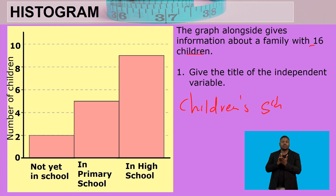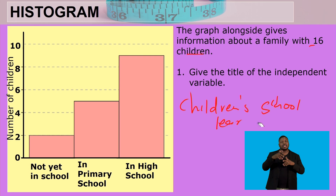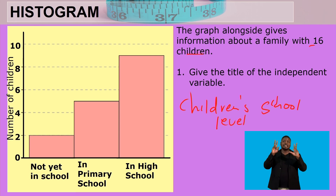So the title for the independent variable would be 'Children's School Level' or 'Children's Education Level.' Any title that meaningfully describes school or education level and fits the categories shown would be acceptable.